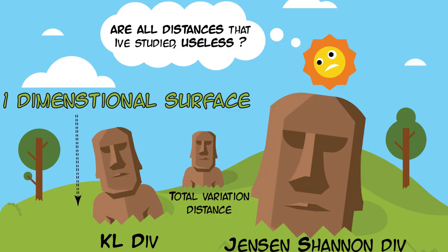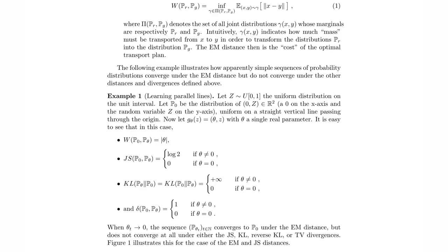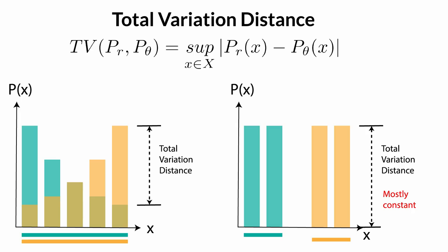In our example, Jensen-Shannon divergence, KL divergence, total variation, all are discontinuous. Let's look at total variation distance. It is the maximum change between the distribution's value at any point. But as I said earlier, there is no common support or common domain point, and hence this distance is always 1 until both the lines are coinciding, when it suddenly drops to 0.